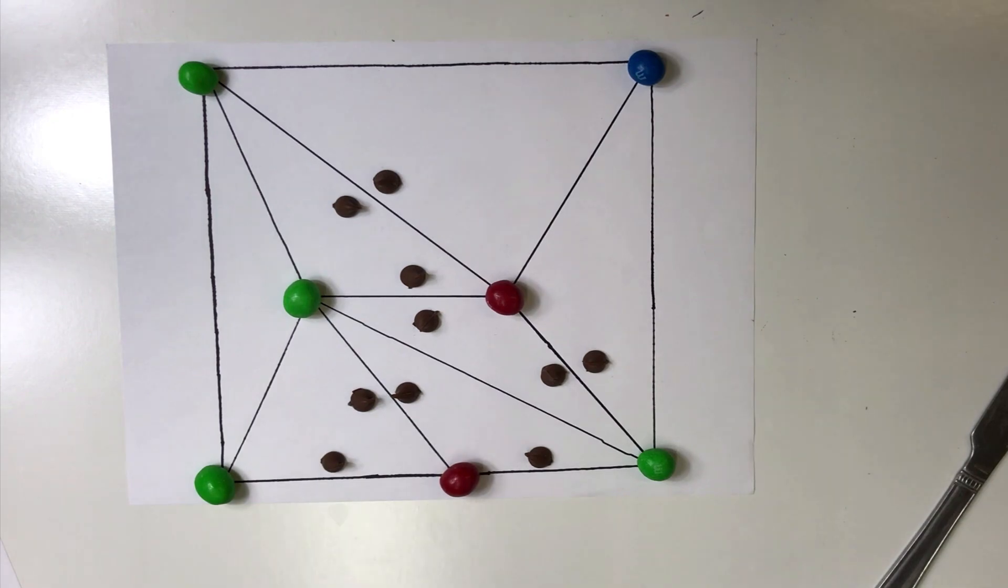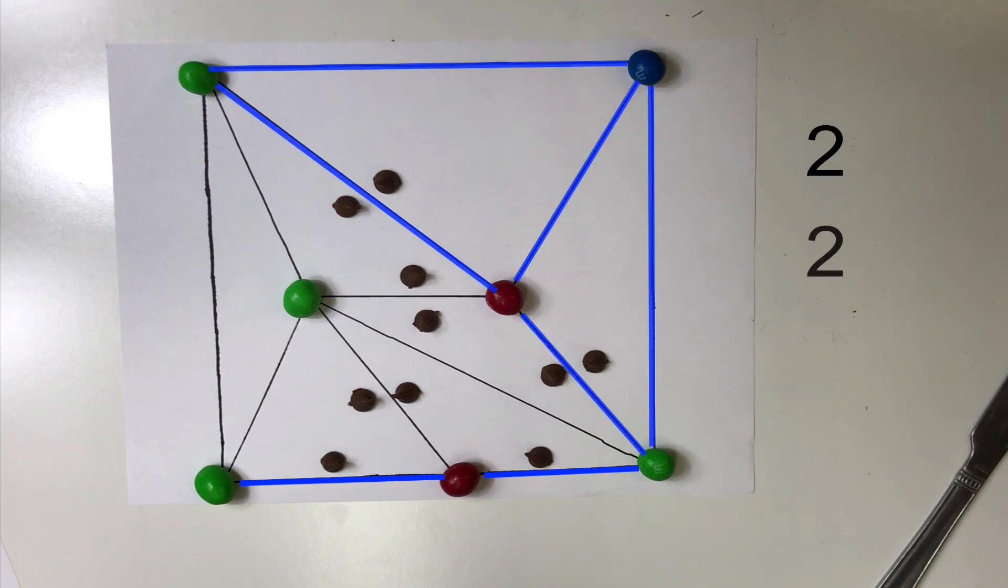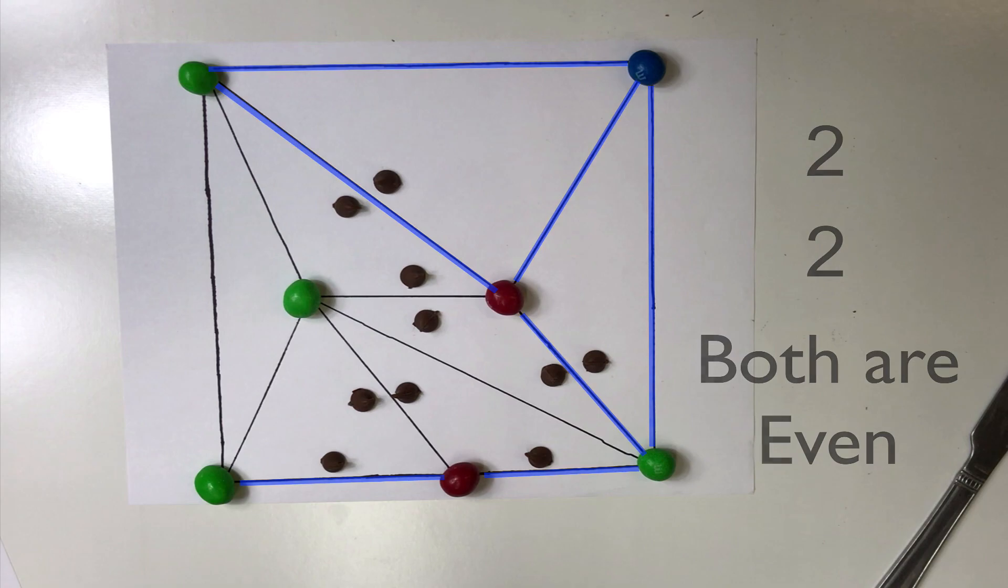This means that no matter how you triangulate or color the vertices, the number of perimeter red-green edges and the number of red-green-blue triangles are either both even or both odd. This is Sperner's Lemma.